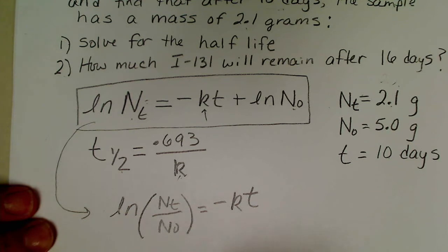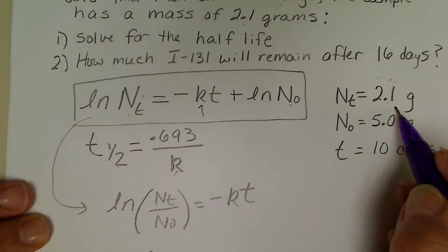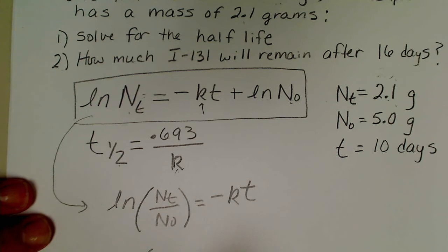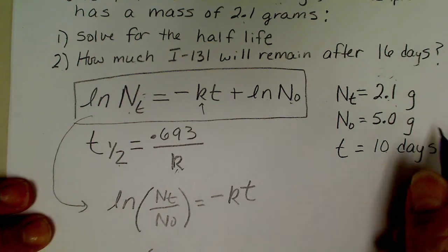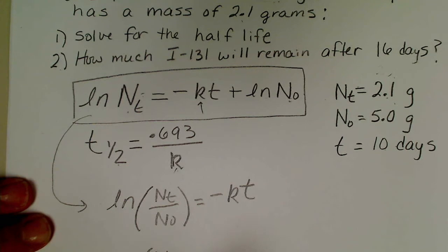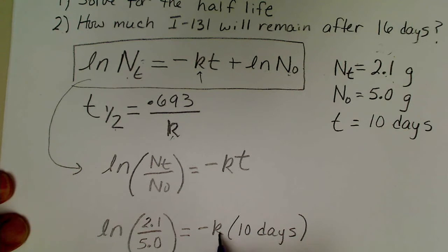I'm going to take the natural log, there's 2.1 grams remaining in the numerator, 5.0 in the denominator. The grams units cancel since the log is unitless. That equals negative k, now t is 10 days. I'm going to solve for k by making this side negative and dividing both sides by 10 days.